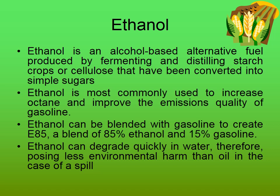Ethanol, being a pure compound, has a fixed set of physical as well as chemical properties. Ethanol can be blended with gasoline to create E85 — a blend of 85% ethanol and 15% gasoline. Ethanol can degrade quickly in water, therefore causing less environmental harm than oil in the case of a spill. The use of alcohol in SI engines started in the 1960s — countries like Germany, USA, and France began using such alternative fuels between 1950 and 1960.